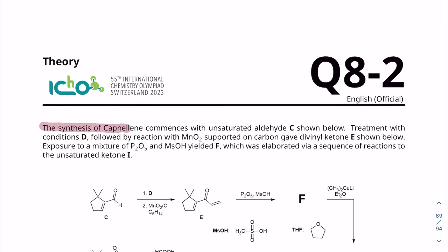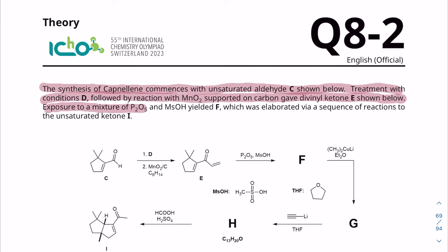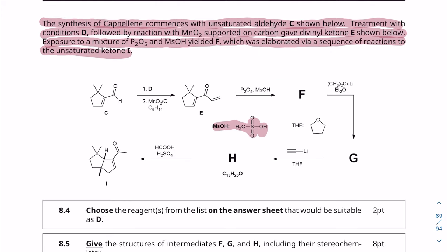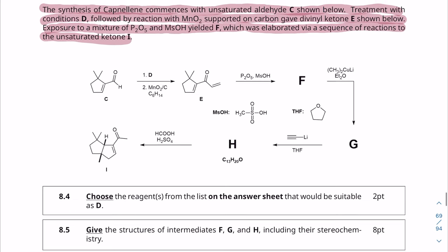The synthesis of capnoline commences with unsaturated aldehyde C shown below. Treatment with conditions D followed by reaction with manganese dioxide supported on carbon gave divinyl ketone E shown below. Exposure to a mixture of P2O5 and MSOH yielded F, which was elaborated via a sequence of reactions to the unsaturated ketone I. So we're given the structure of MSOH, which is a strong acid and THF. So we have an aldehyde here that gets turned into an alpha beta unsaturated ketone with D and an oxidation step. So this to me screams a nucleophilic addition to the carbonyl that gets turned into an OH and then is oxidized by manganese dioxide back to the ketone. But let's actually read the questions. That's very important.